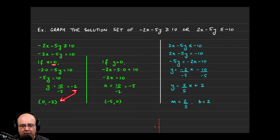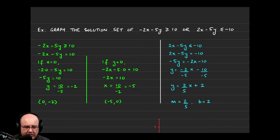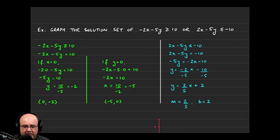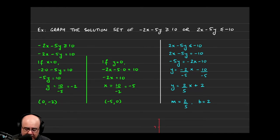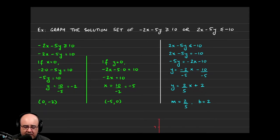So the y intercept is the point (0, -2) — that's where the line crosses the y axis. Similarly, I can find the x intercept by setting the y coordinate equal to 0. Plugging 0 in for y, negative 5 times 0 is gone, leaving negative 2x equals 10. Dividing by negative 2 gives x equals negative 5. So the x intercept is negative 5 comma 0, where the line crosses the x axis.